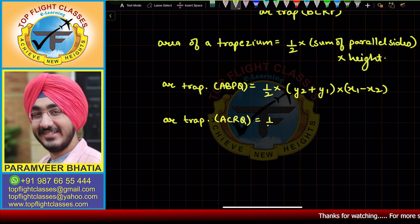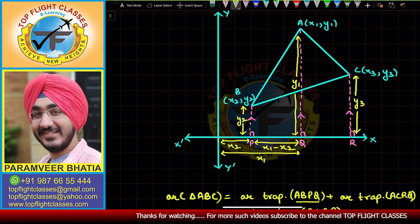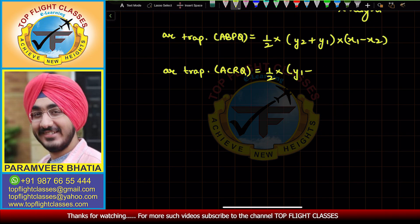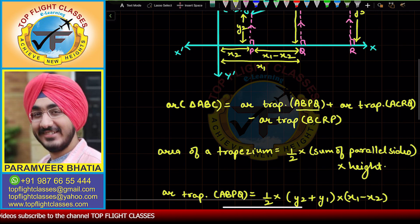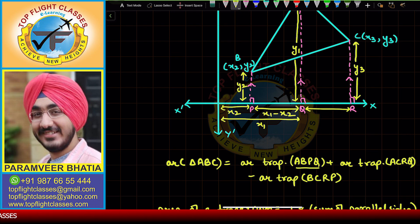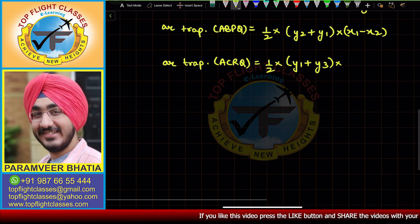The area of trapezium ACRQ is half times the sum of the parallel sides AQ and CR. AQ has length y1 and CR has length y3. The height in this case is QR. Since the x-coordinate of C is x3, QR equals x3 minus x1. So area of trapezium ACRQ is half times (y1 + y3) times (x3 − x1).